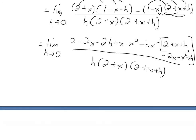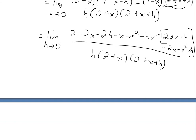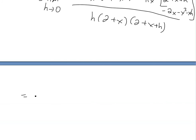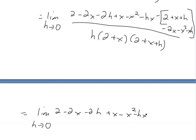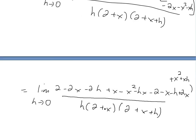Now if we simplify further — it's a lot of algebra — we take the bracket out by distributing the negative through everything inside: negative 2 becomes positive 2, negative x becomes positive 2x (when combined), and we also get plus x squared because negative times negative is positive, plus xh, all over the common denominator.